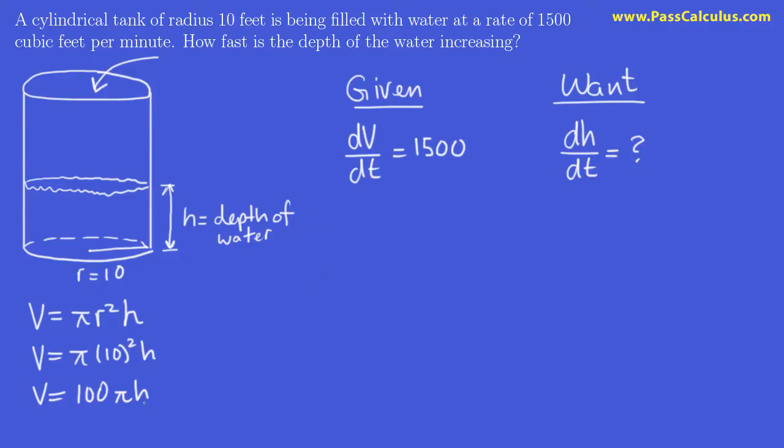Let's implicitly differentiate our main equation with respect to time. The derivative of V with respect to time is dV/dt. 100π is just a constant, so we pull that out front. The derivative of h with respect to time is dh/dt. So dV/dt = 100π(dh/dt). We know that dV/dt is constant and equal to 1500, so we'll replace that: 1500 = 100π(dh/dt).